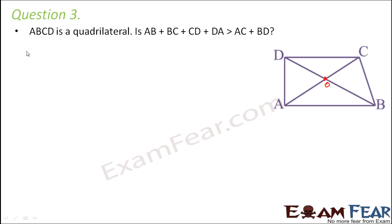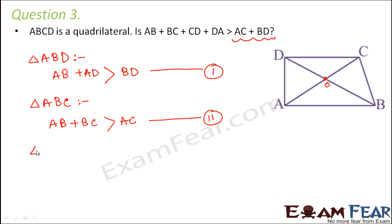If we consider triangle ABD, the property that sum of the lengths of two sides is greater than the third side is true. So we can say AB plus AD is greater than BD. Similarly, in triangle ABC, AB plus BC is greater than AC. Likewise in triangle ACD, AD plus CD is greater than AC, which is our equation 3. And finally in triangle BDC, BC plus CD is greater than BD, which is our equation 4.